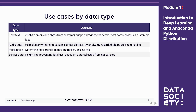The following are examples of deep learning use cases organized by data type. We might analyze emails and chats from a customer support database to detect the most common issues that customers face. Or using audio data, we might identify whether a person is under distress by analyzing recorded phone calls to a hotline. With stock price data, we might determine price trends, detect anomalies, or assess risk. We could also get insight into preventing fatalities based on data collected from car sensors.